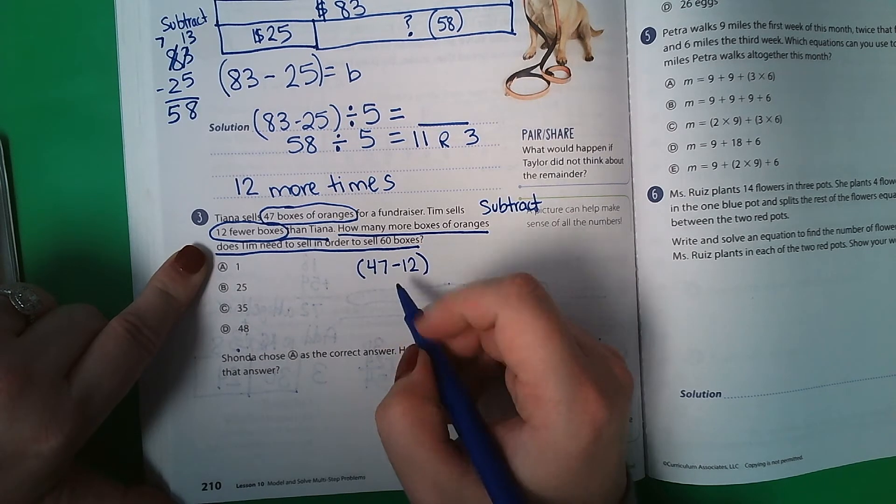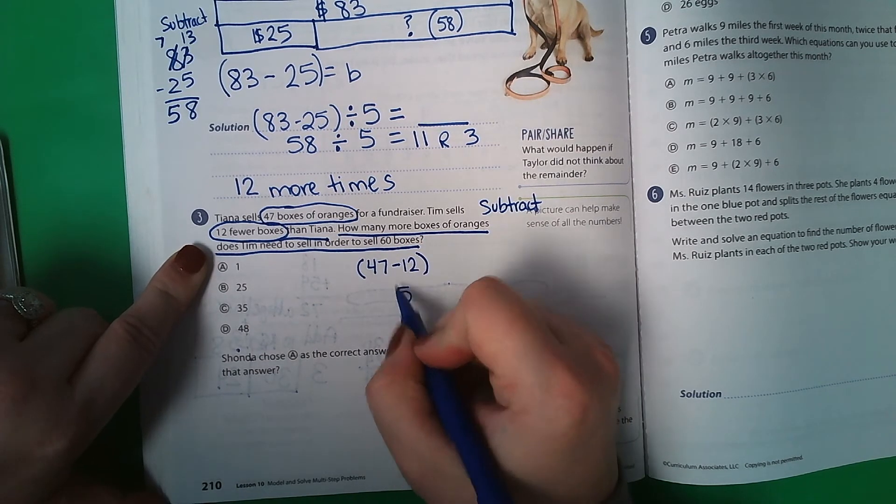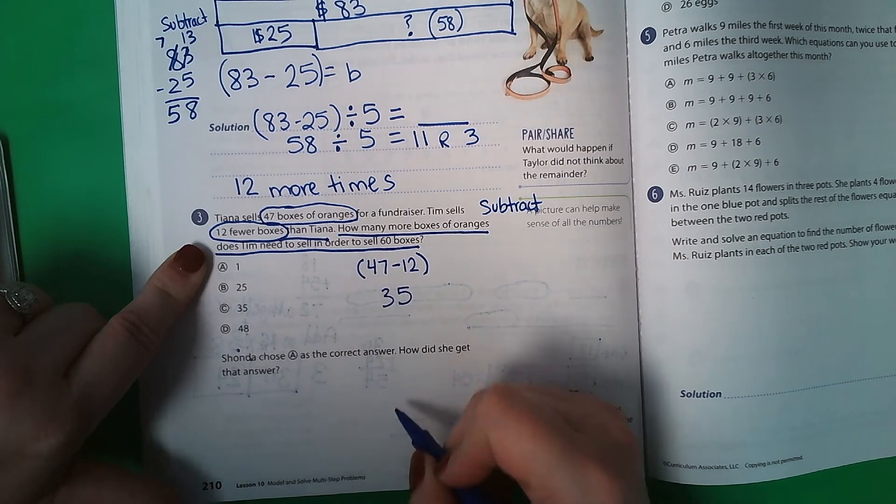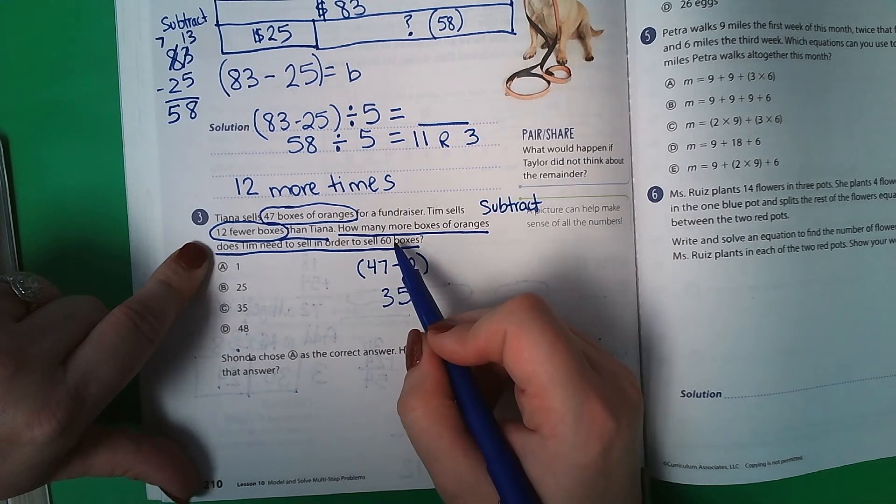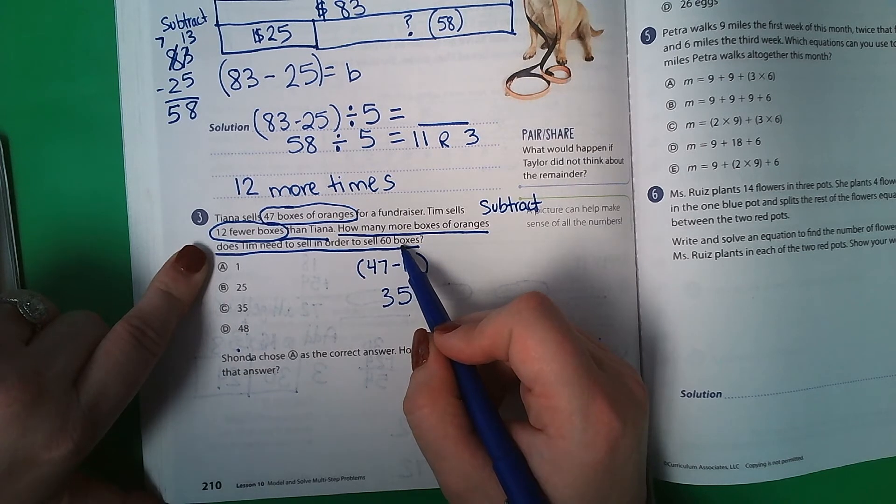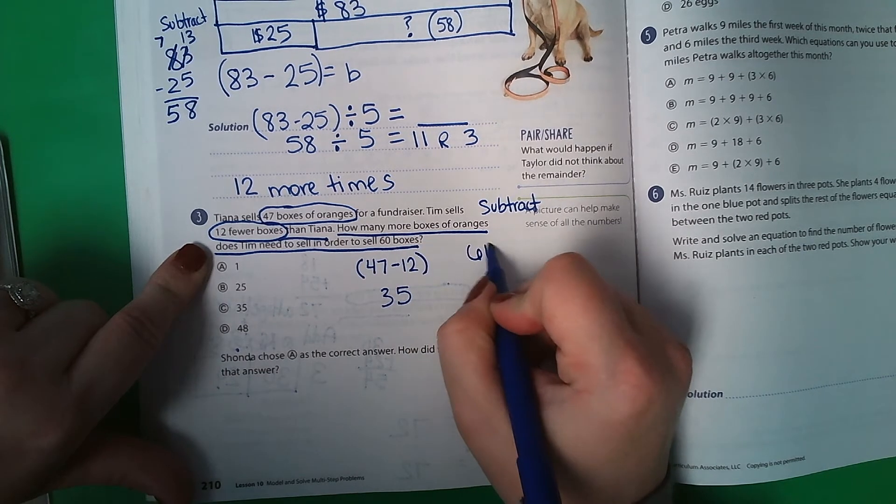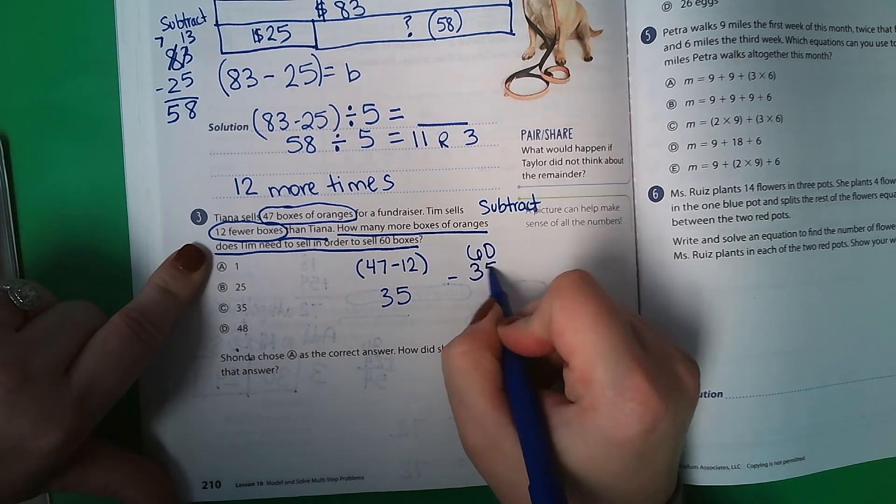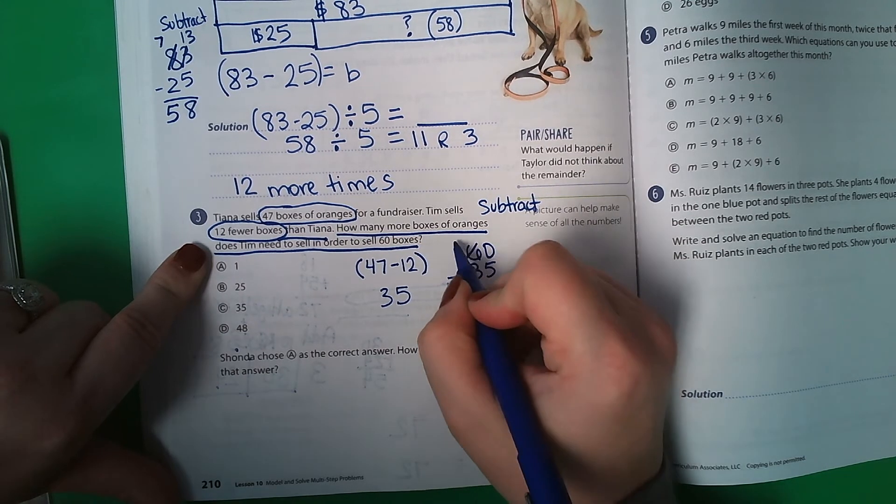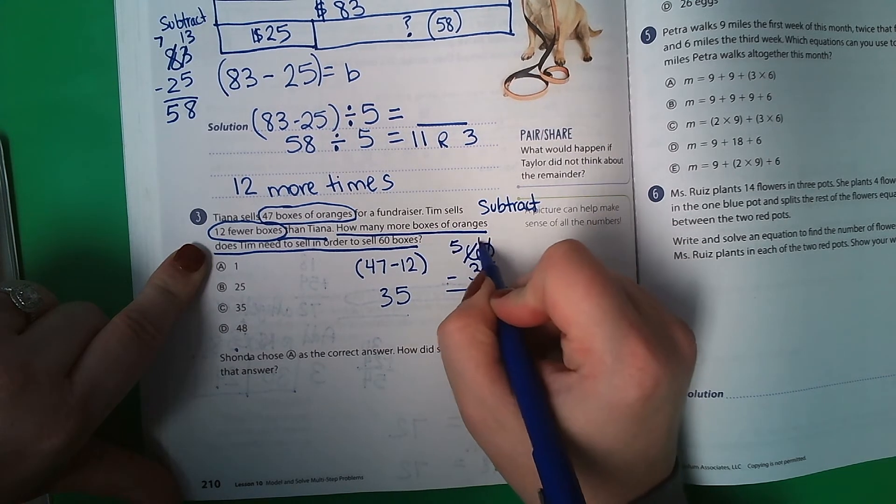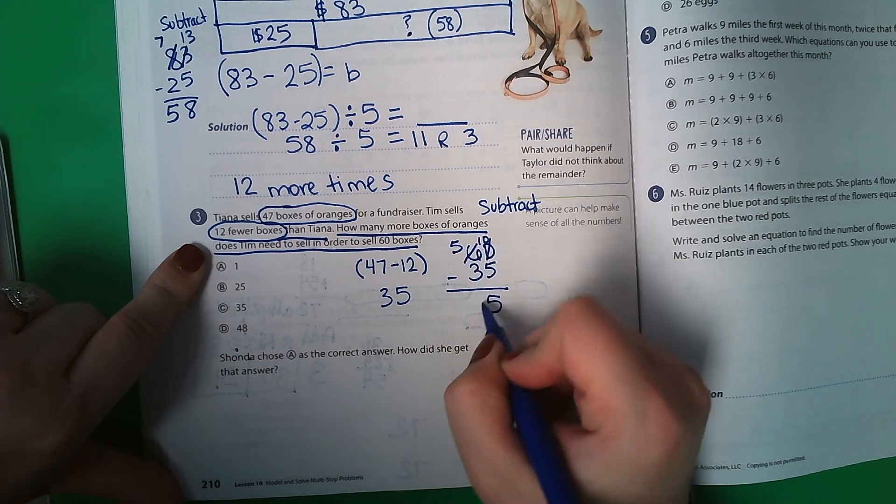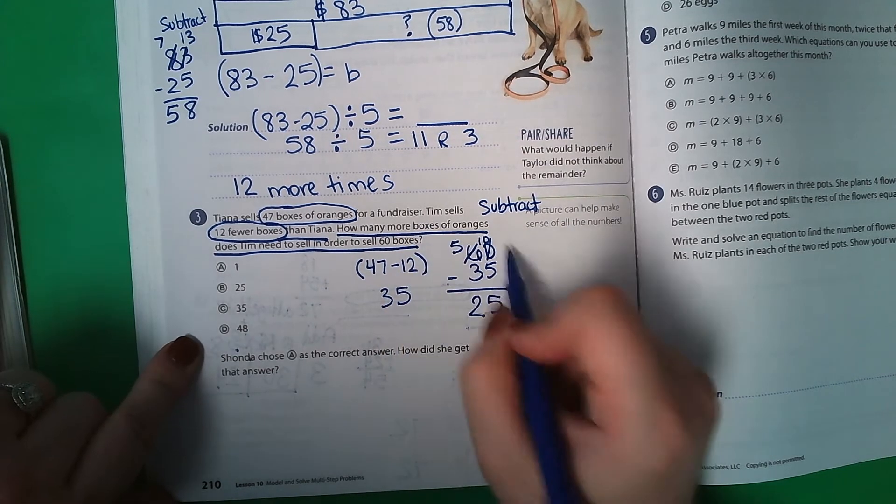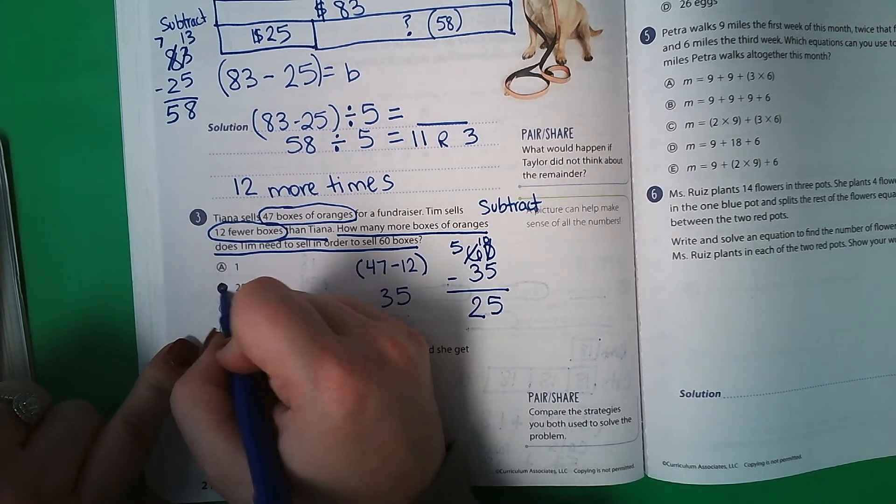So 47 minus 12 is going to be 5, 35. But he needs to sell 60. So then we're going to do 60 minus 35. This becomes a 5. That becomes a 10. So 5 and 2. So Tim needs to sell 25 more boxes.